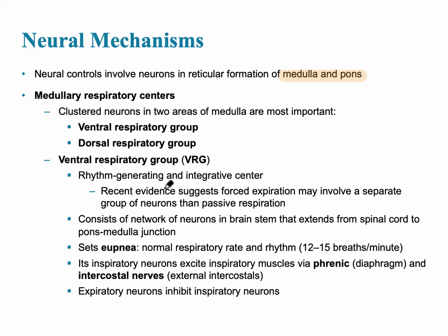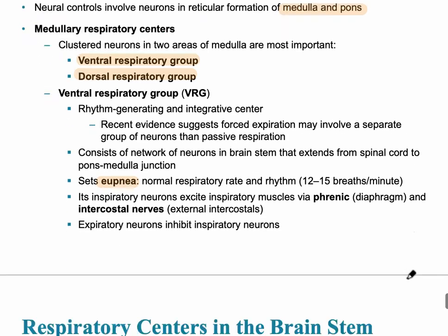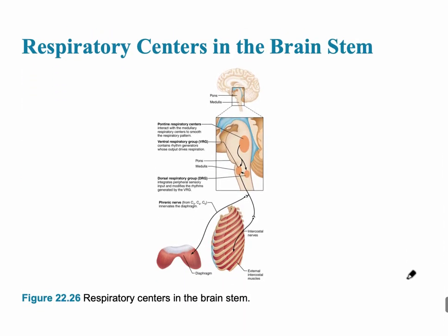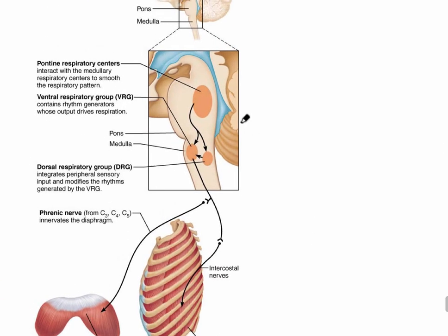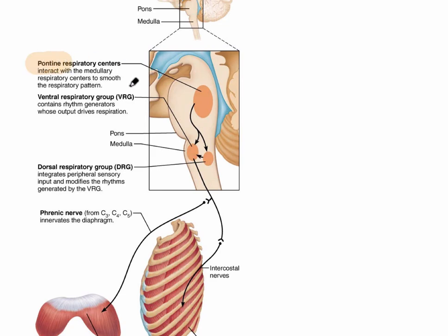These clusters of neurons come in a couple of different groups: one called the ventral respiratory group, and one called the dorsal respiratory group. What this does is it sets the normal respiratory rate, called eupnea. Looking at a diagram of the respiratory centers in the brain stem, we can see the pontine respiratory centers in the pons, and the ventral respiratory group in the medulla just below that.